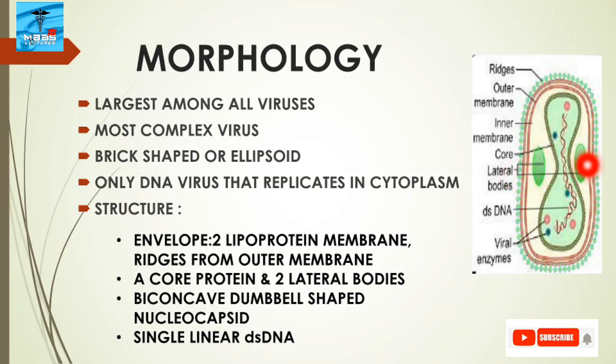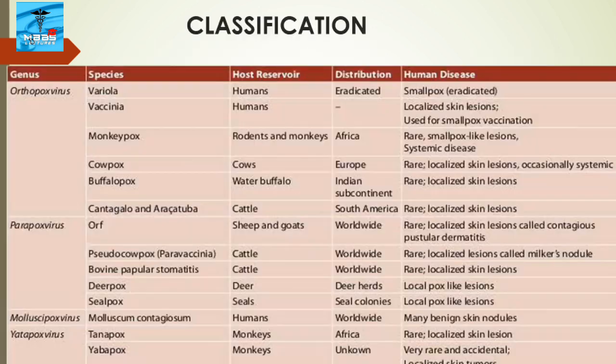The envelope encloses a core and two structures of unknown function called lateral bodies. We can see the core and the two lateral bodies in the structure.